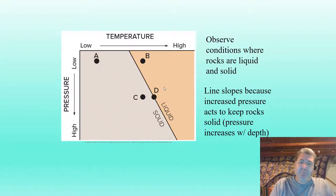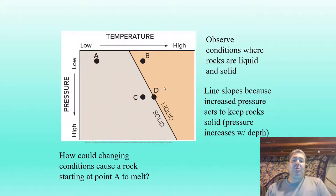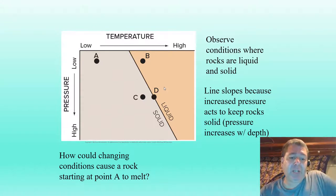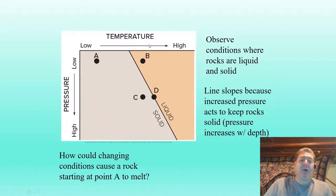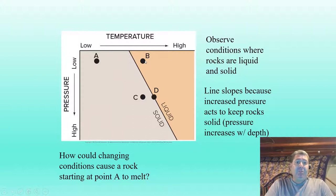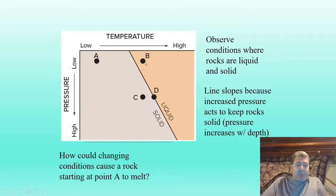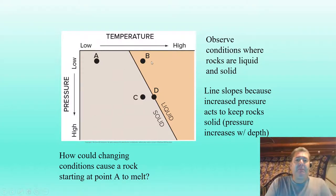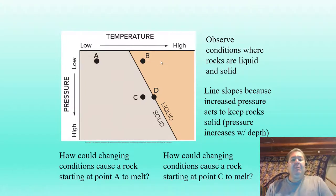Let's look at point A. How could we change conditions at point A to cause it to melt? About the only option we have is to increase the temperature — from A to B. If we just increase the temperature without changing the pressure at all, so it's not going deeper or getting buried, staying at the same elevation, we can cause that rock to melt.